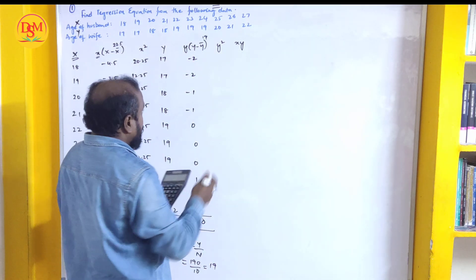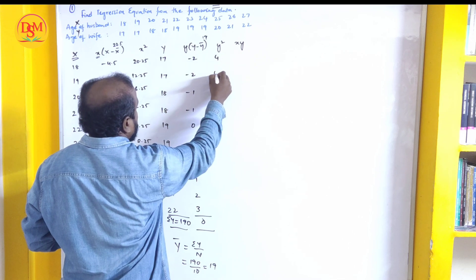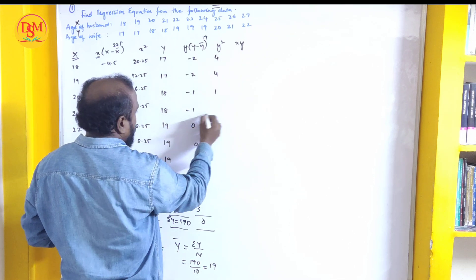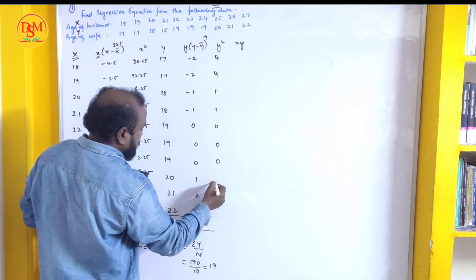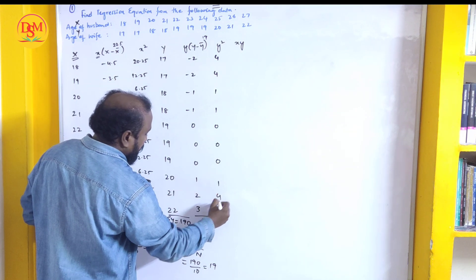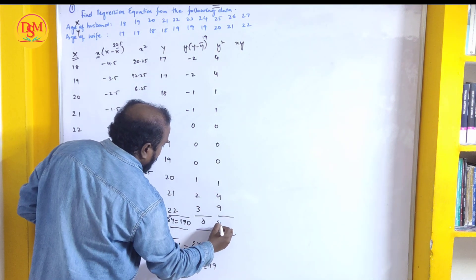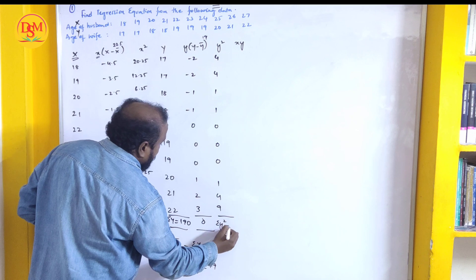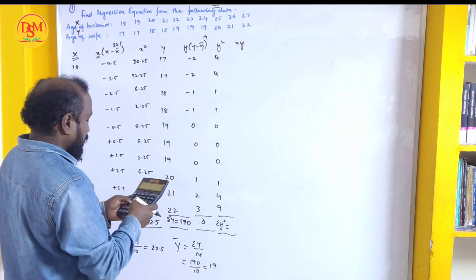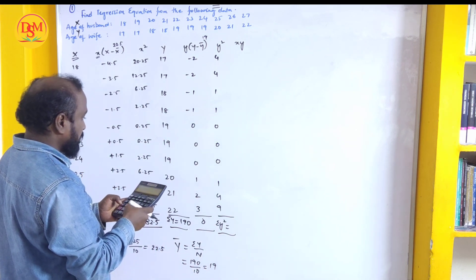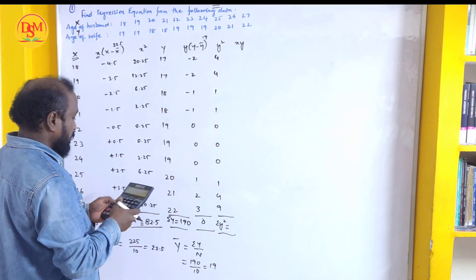Now squaring each small y: (−2)²=4, (−2)²=4, (−1)²=1, (−1)²=1, 0²=0, 0²=0, 0²=0, 0²=0, 1²=1, 2²=4, 3²=9. Total sigma y² = 4+4+1+1+0+0+0+0+1+4+9 = 24.